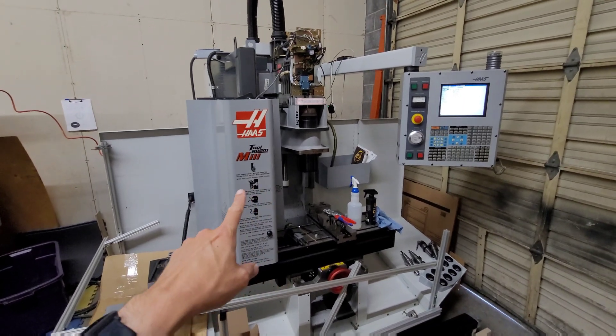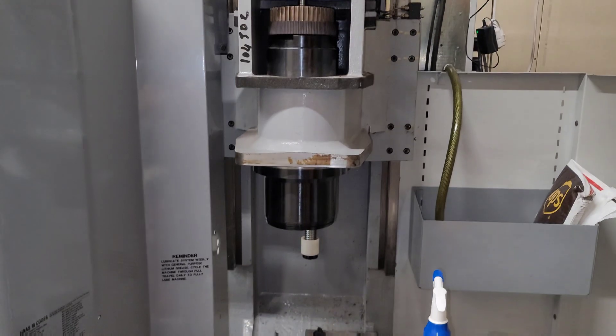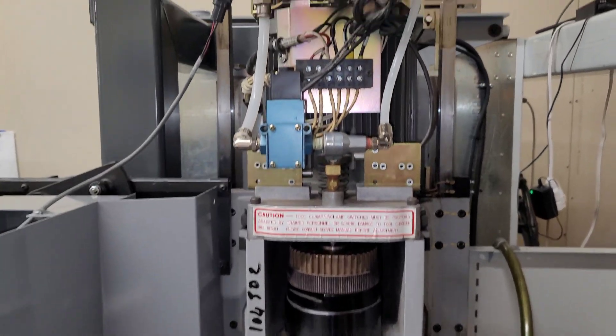Okay, so I've removed the cover off of the Haas TM1. So this is the spindle assembly with the cover removed.